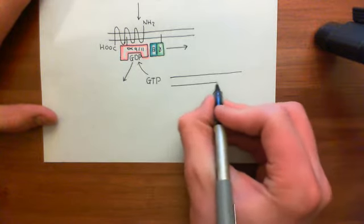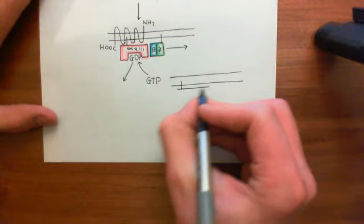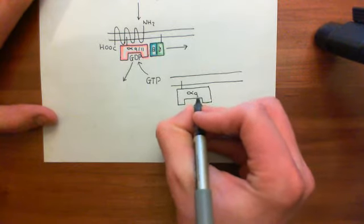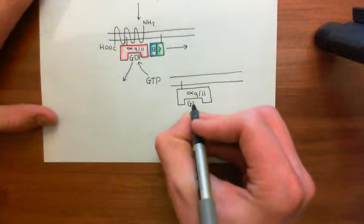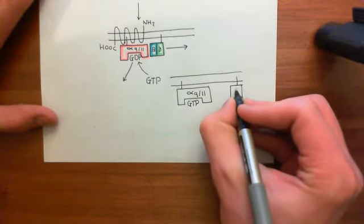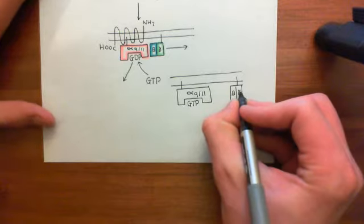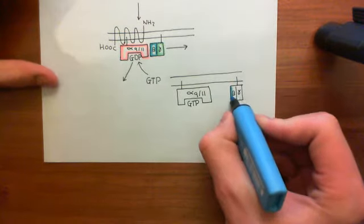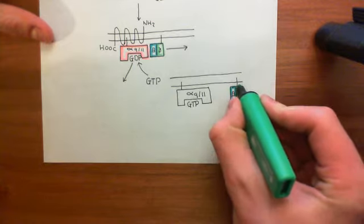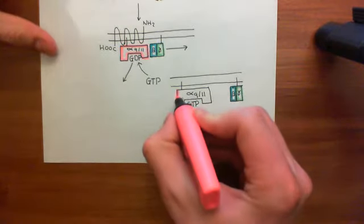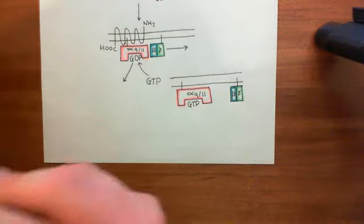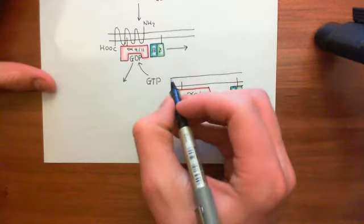We don't need to draw the G-protein coupled receptor anymore — it's done its job. What we now have is the activated alpha subunit in the G-alpha-Q/11 family, currently in the on state with guanosine triphosphate bound to it, and we also have the beta-gamma complex. These are going to go and interact with targets. We'll discuss the specific targets in a moment, but for now I'm just giving the general principles of the G-protein cycle.